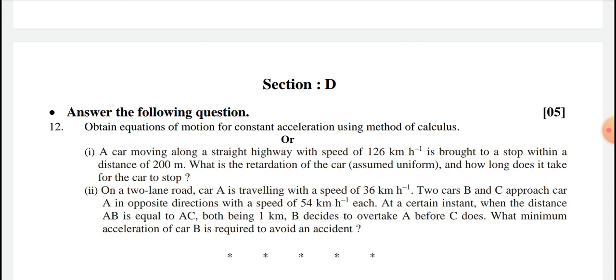A car moving along a straight highway with a speed of 126 km per hour is brought to a stop within a distance of 200 meters. What is the retardation of the car?